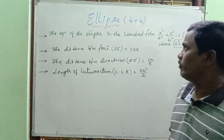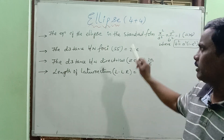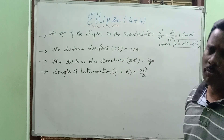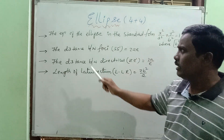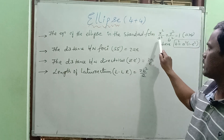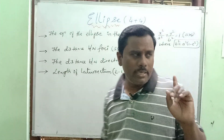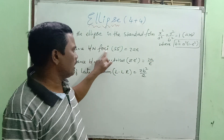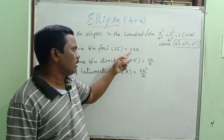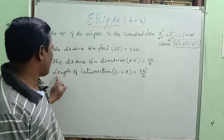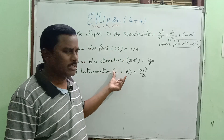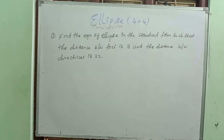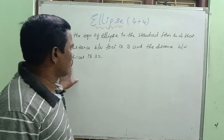Hi, welcome to my channel. Today we have a very important topic: the ellipse, which is compulsory and carries 4 marks. Ellipse and hyperbola have similar question patterns. The standard form of the ellipse equation is x²/a² + y²/b² = 1, where a > b. Key formulas: b² = a²(1 - e²), distance between foci = 2ae, distance between directrices = 2a/e, and length of latus rectum = 2b²/a. We will discuss three questions.